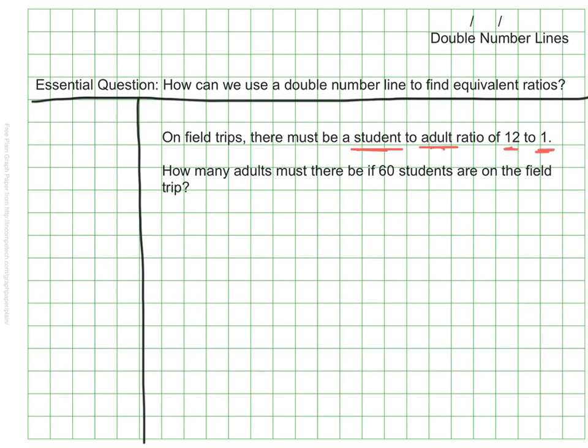Because of the way this was written, we know that the 12 represents our students and our 1 represents the number of adults. Lastly, we know that in this situation there are 60 students attending the field trip, and it's our job to find out the number of the adults.